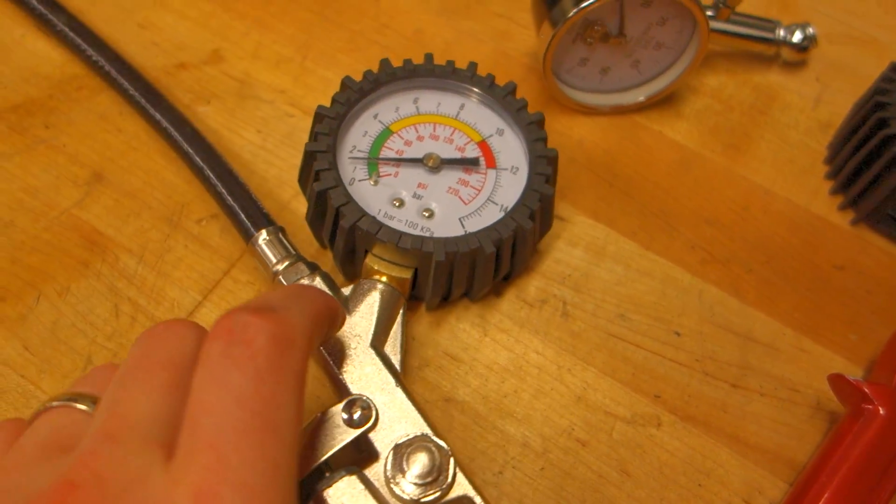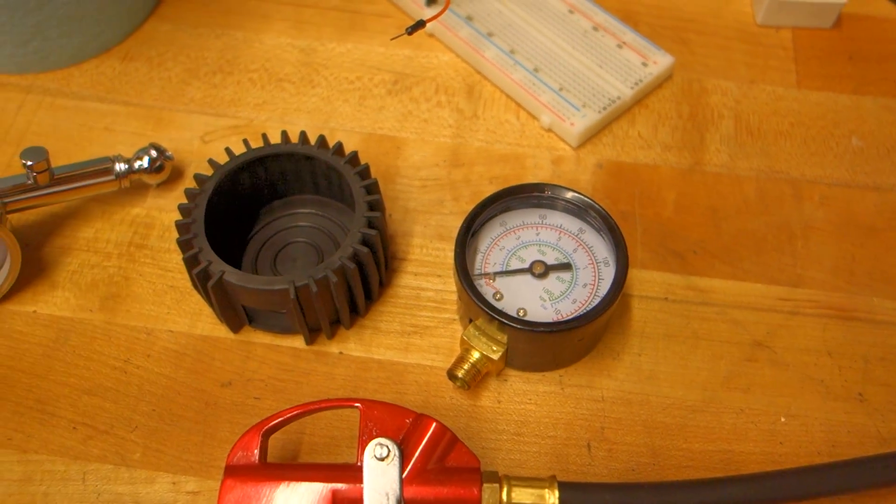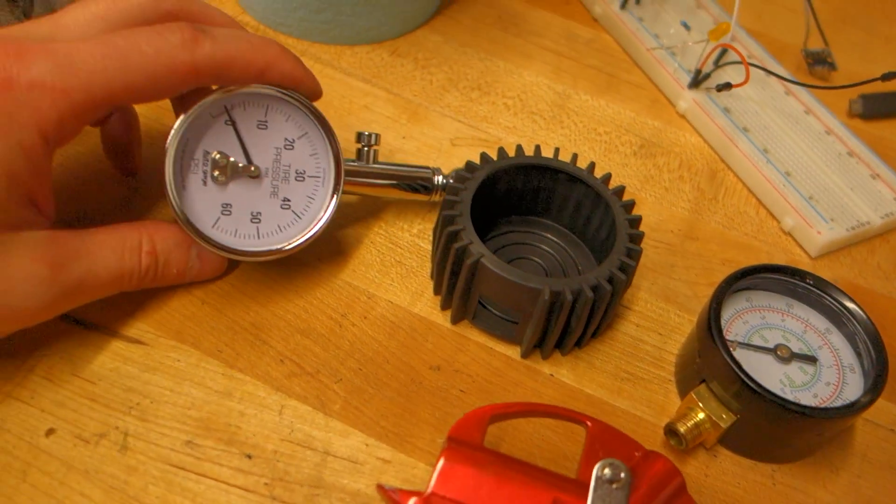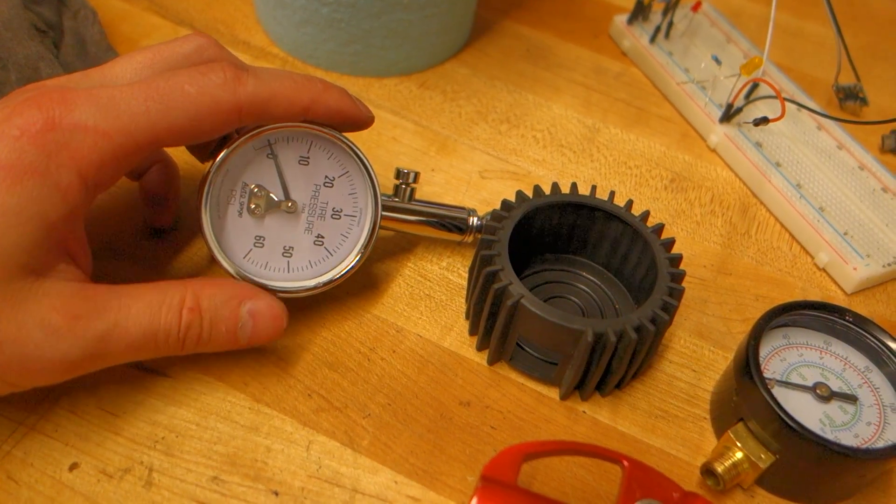So the question is how do you get something like this to read zero correctly and actually read air pressure that matches a proper tire pressure gauge.